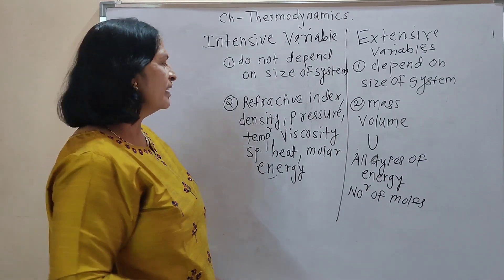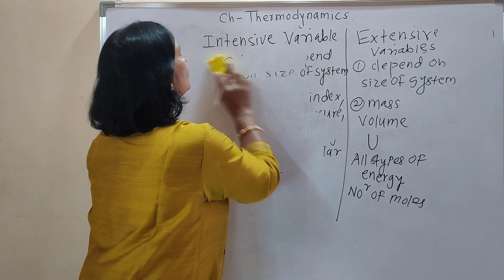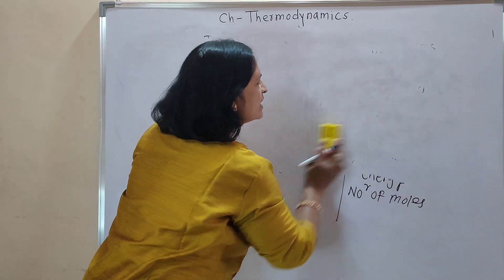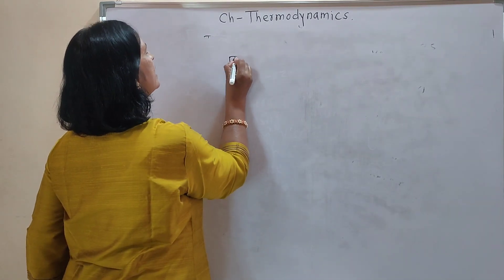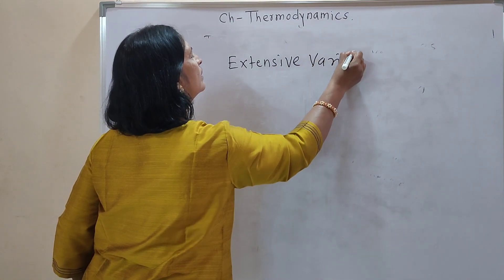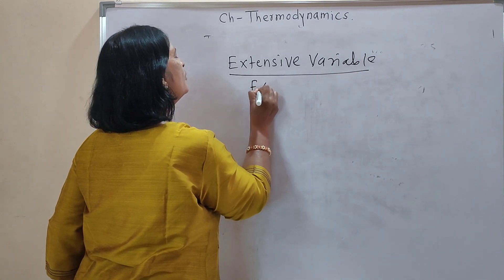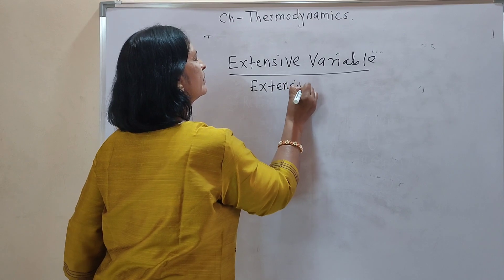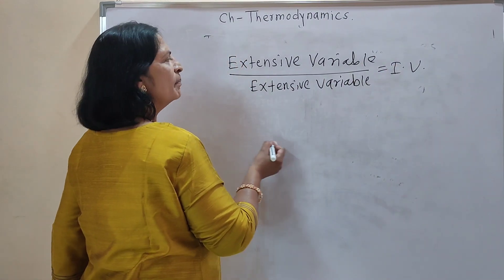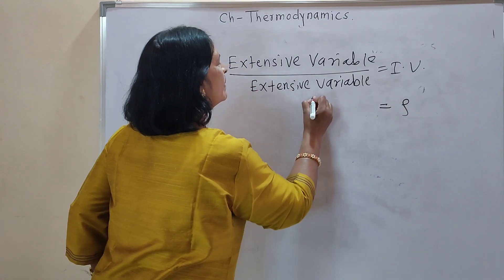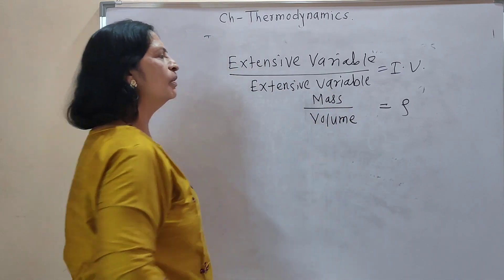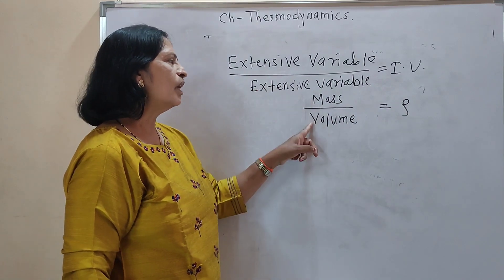There is also a formula or shortcut to keep in mind: extensive variable divided by extensive variable equals an intensive variable. For example, density is an intensive variable, and mass and volume are extensive variables — mass divided by volume equals density. These two are extensive variables and density is the intensive variable.